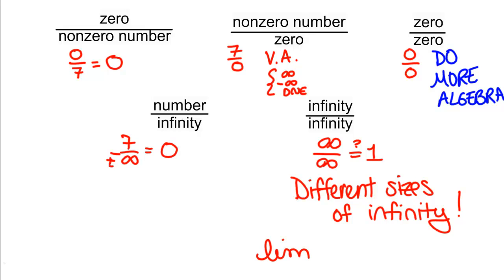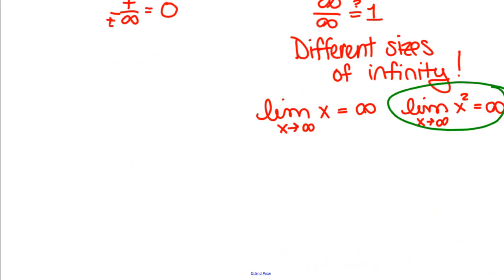But for our purposes, for example, the limit as X goes to infinity of X is infinity, and so is the limit as X goes to infinity of X squared. But the X squared function gets to infinity faster. And since it gets to infinity faster, it's going to be, in some sense, a bigger infinity. So what this means is that if you have infinity divided by infinity, you could actually have all kinds of different answers.